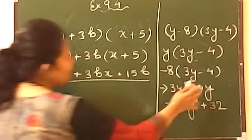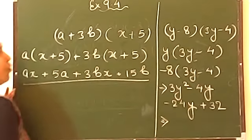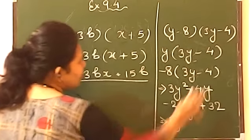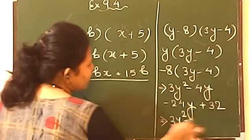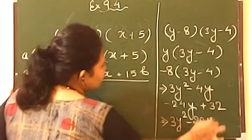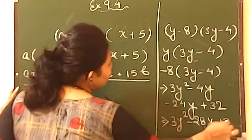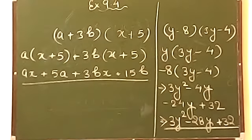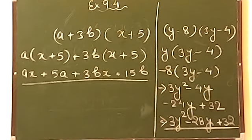Now you can see minus 4y and minus 24y are like terms. So simply you will write it down 3y square. Minus 4y minus 24y will be added which will give you minus 28y. And 32 was common. So plus 32 will remain like that as it is. So this is your complete answer.